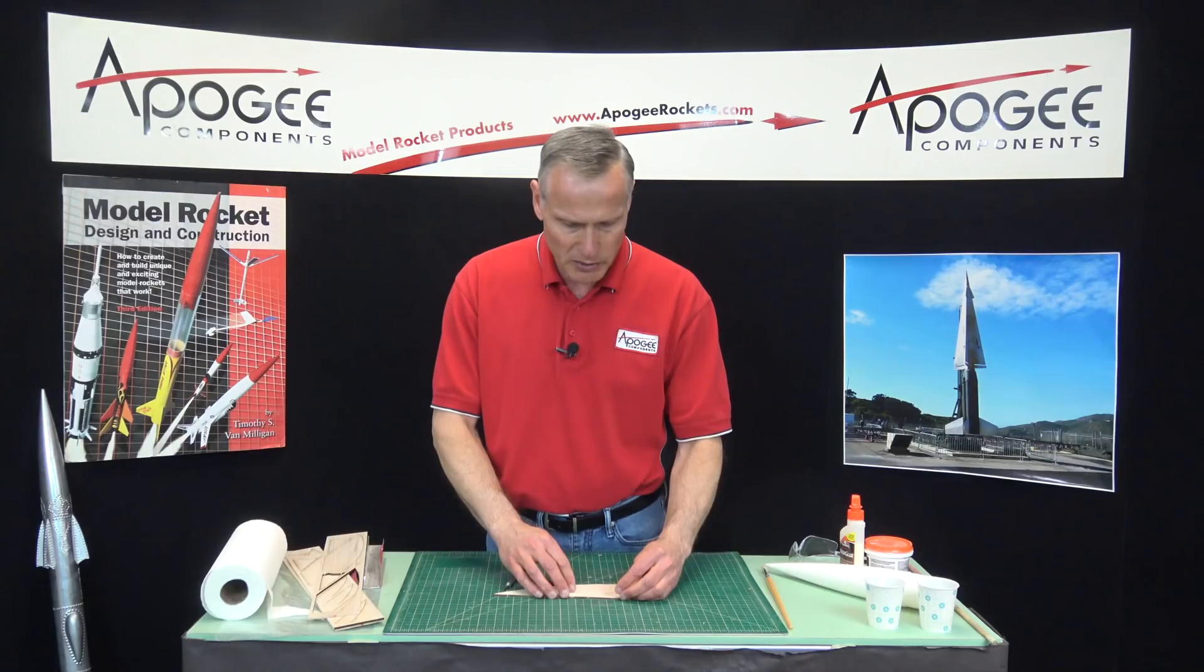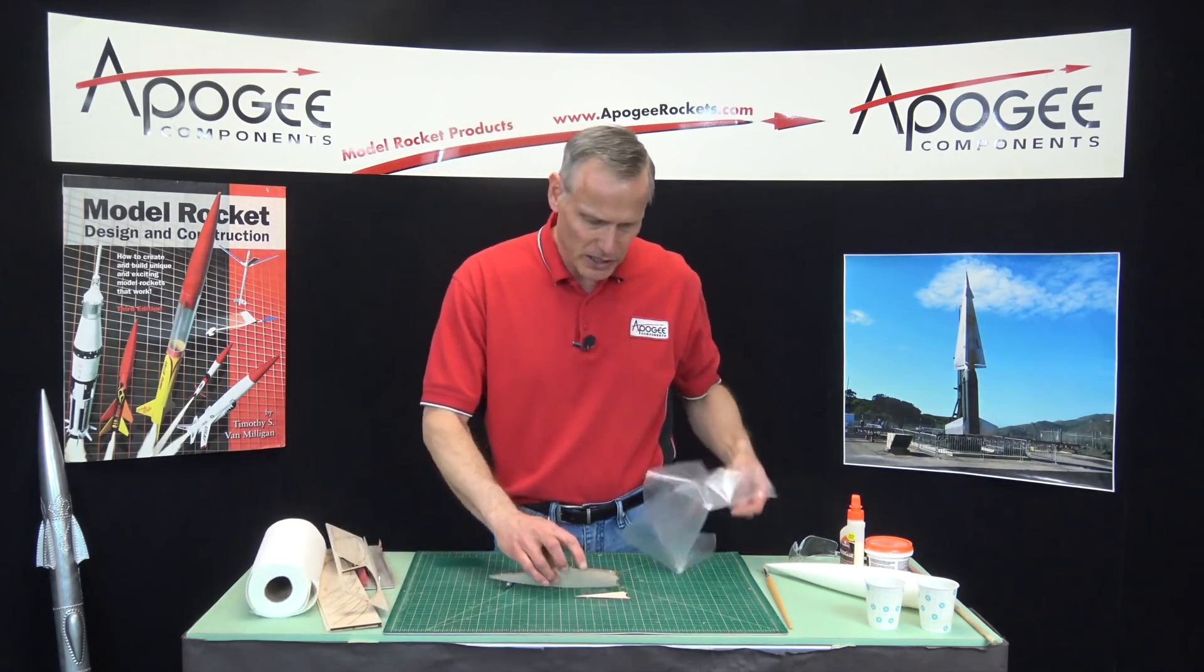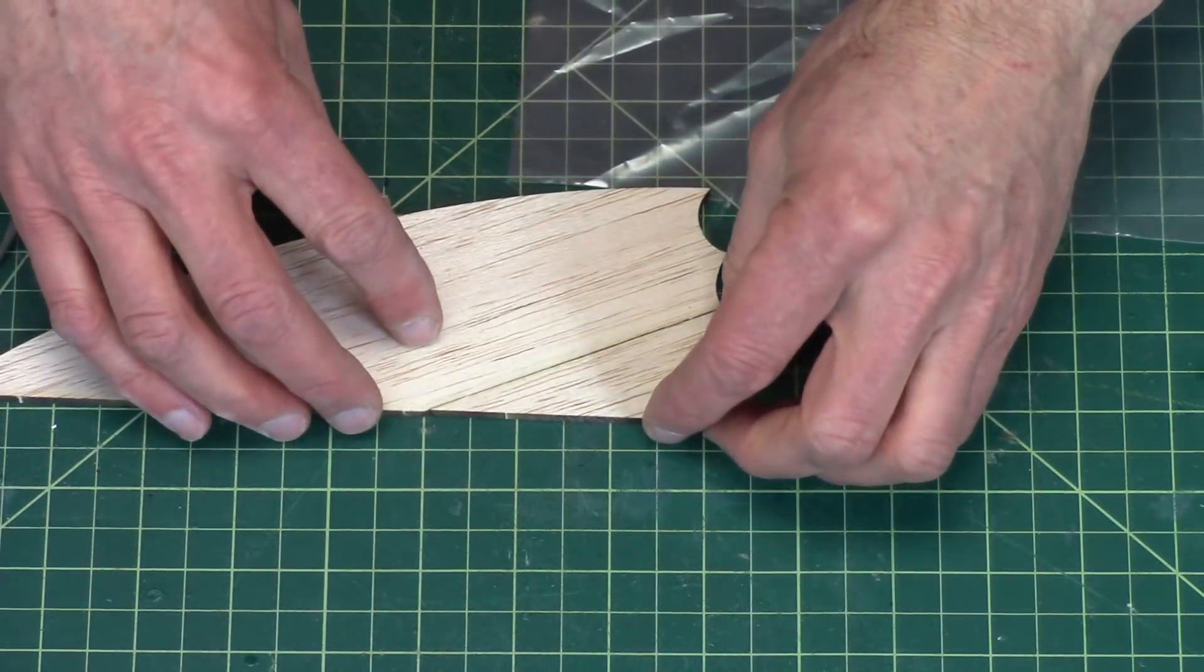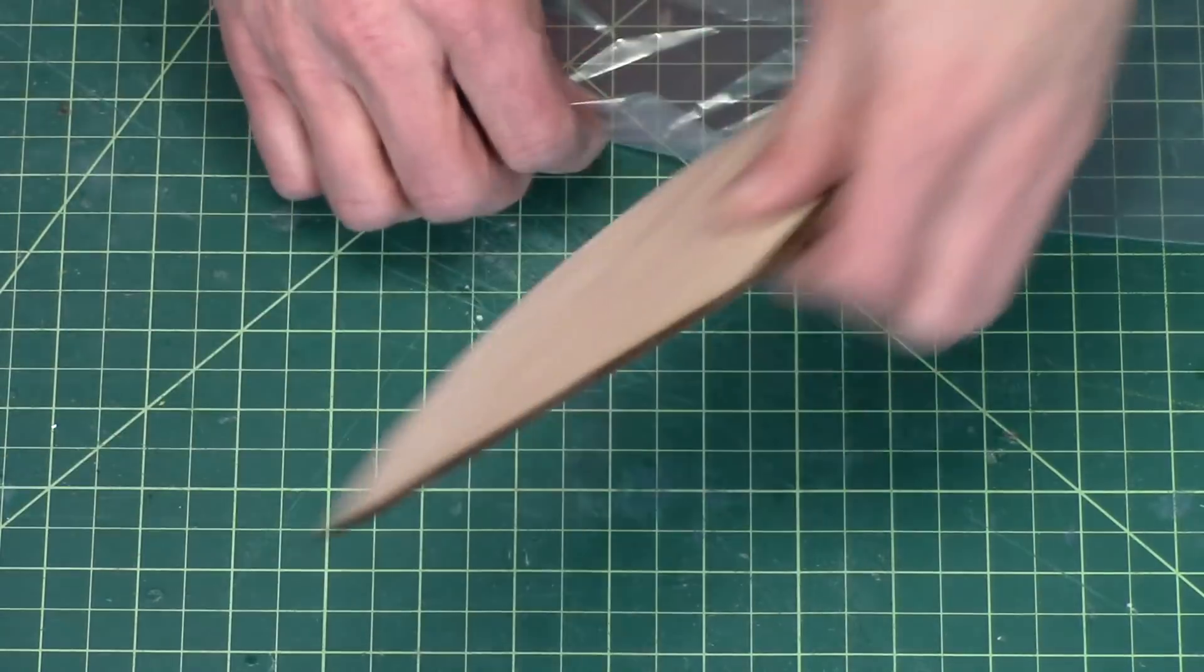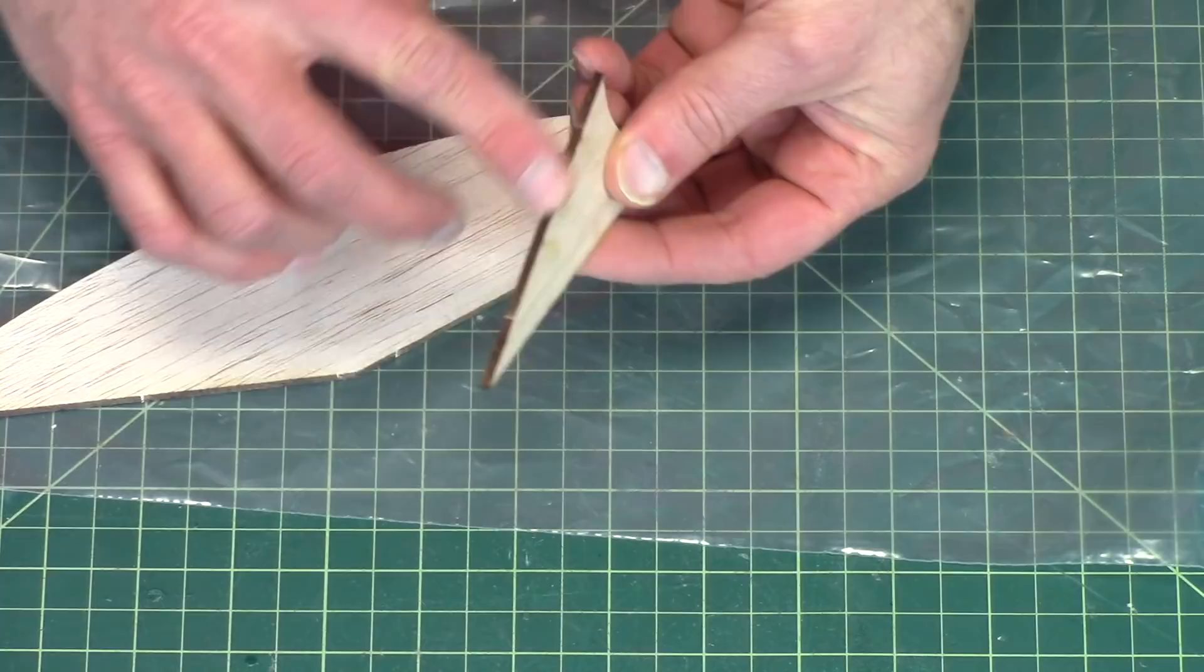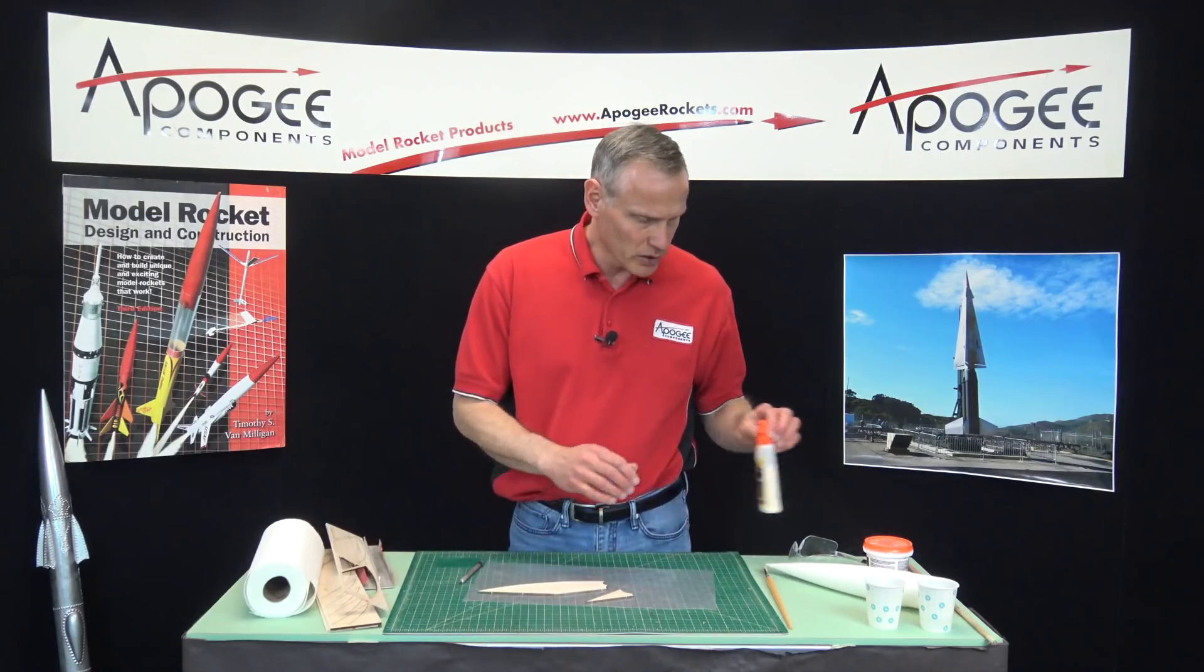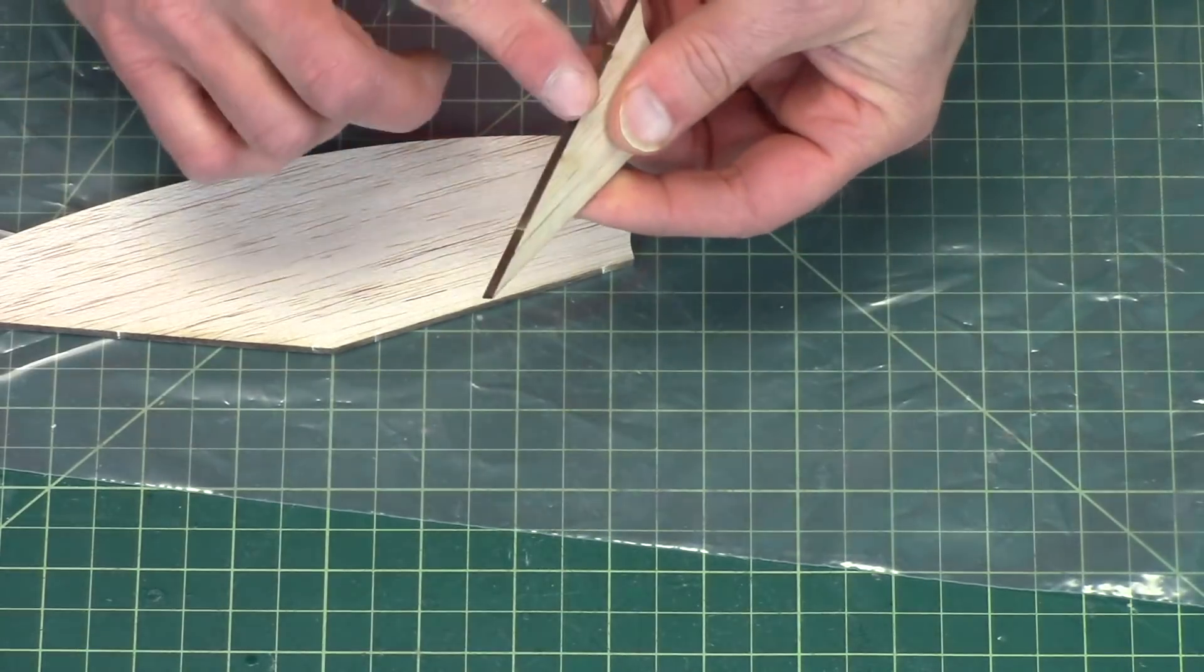I'm going to glue first and then I'm going to sand. The reason for that is if you start sanding these edges they're not going to line up properly. They're sized so that they will fit together nice and even.